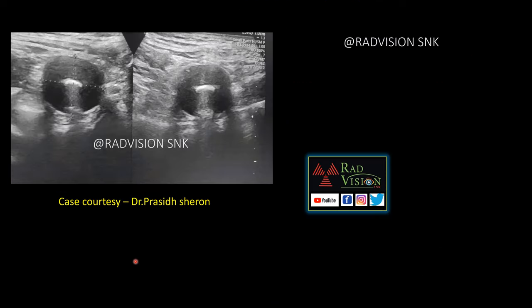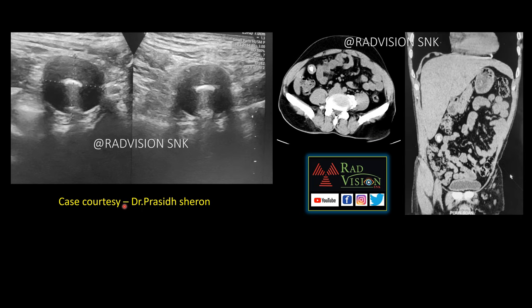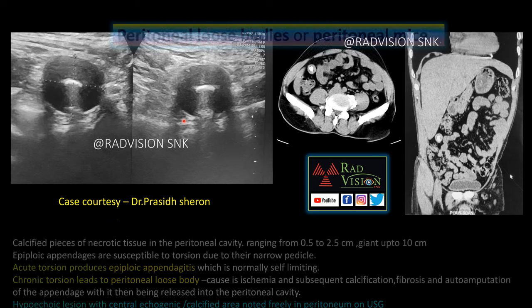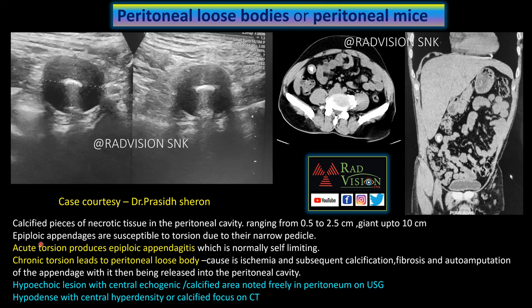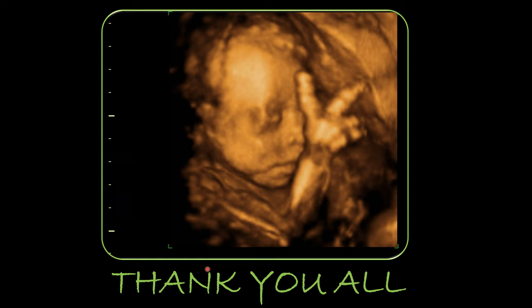Next case: a hypoechoic lesion noted in the peritoneum with a central echogenic or calcified focus, freely mobile within the peritoneum — suspect peritoneal loose bodies or peritoneal mice. Thanks to Dr. Prasid Sharon for contributing this case. On CT, this appears as a hypodense lesion with a central calcified focus, close to the right lobe of the liver, freely mobile in the peritoneum. These lesions should move freely and commonly do not attach to adjacent structures. They originate from epiploic appendages susceptible to torsion due to a narrow pedicle — acute torsion produces epiploic appendagitis, while chronic torsion leads to these peritoneal loose bodies.